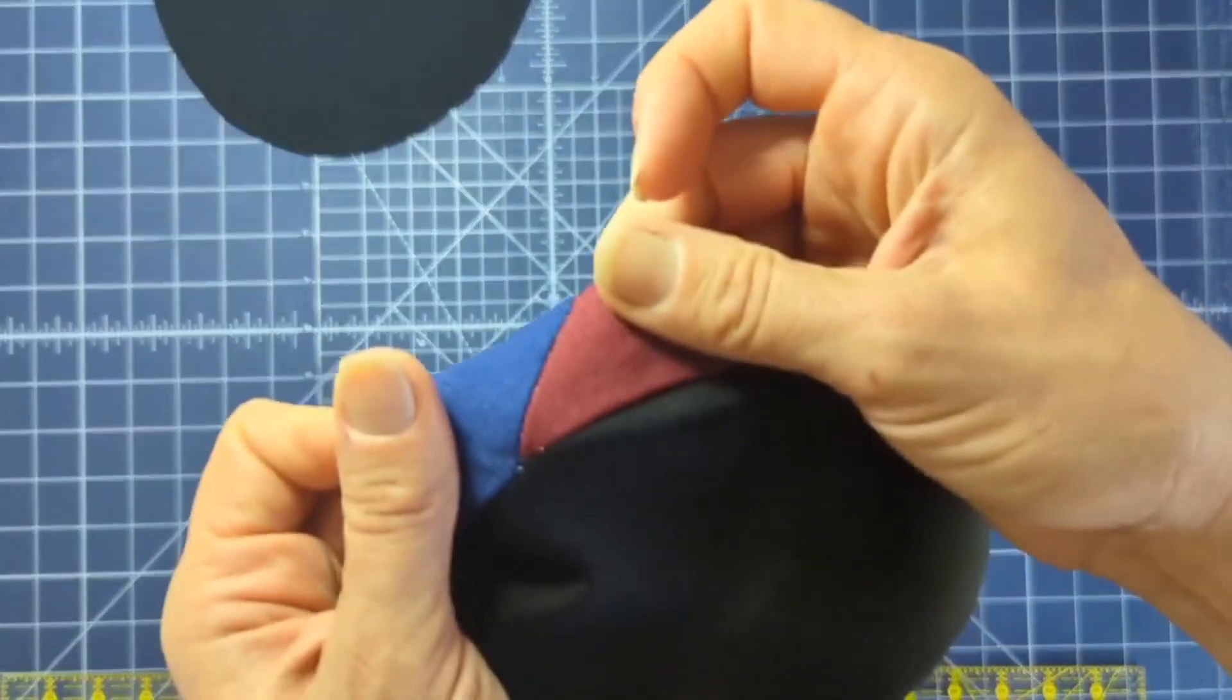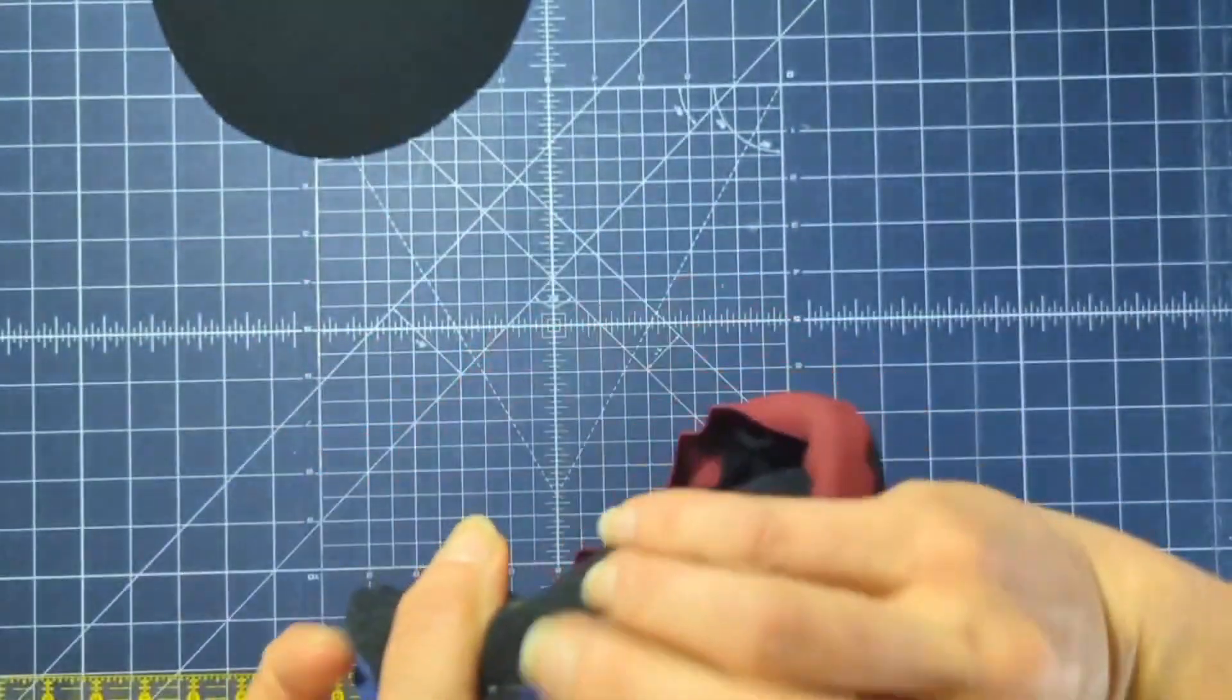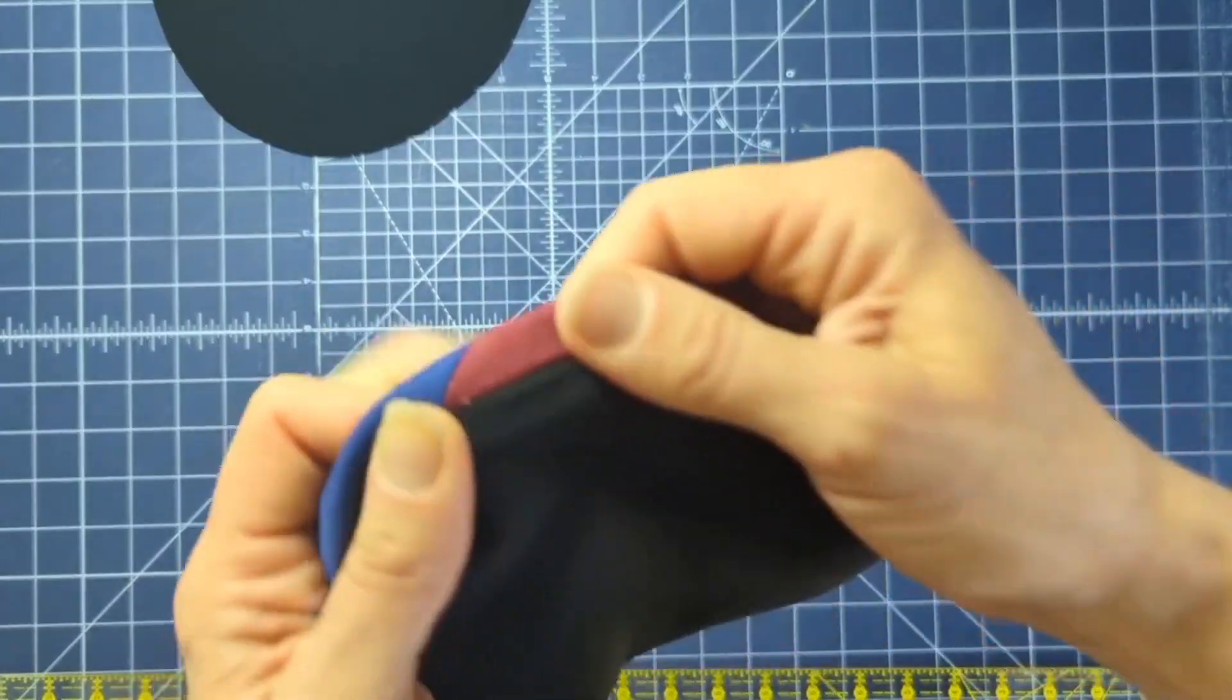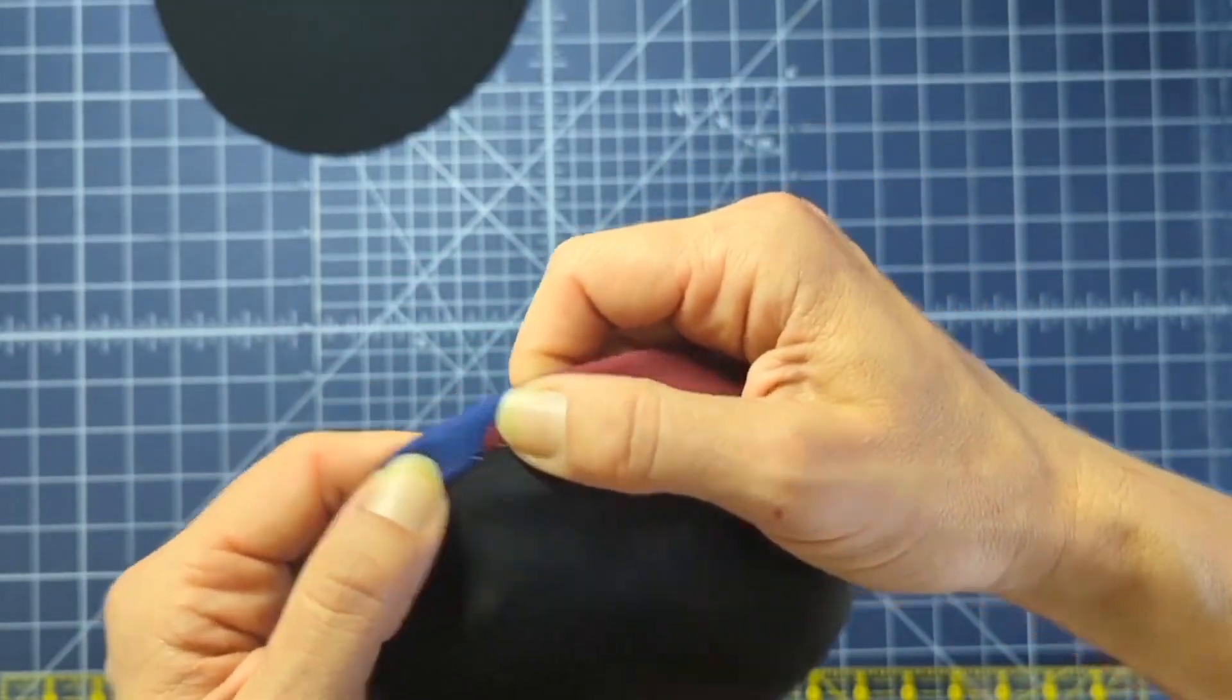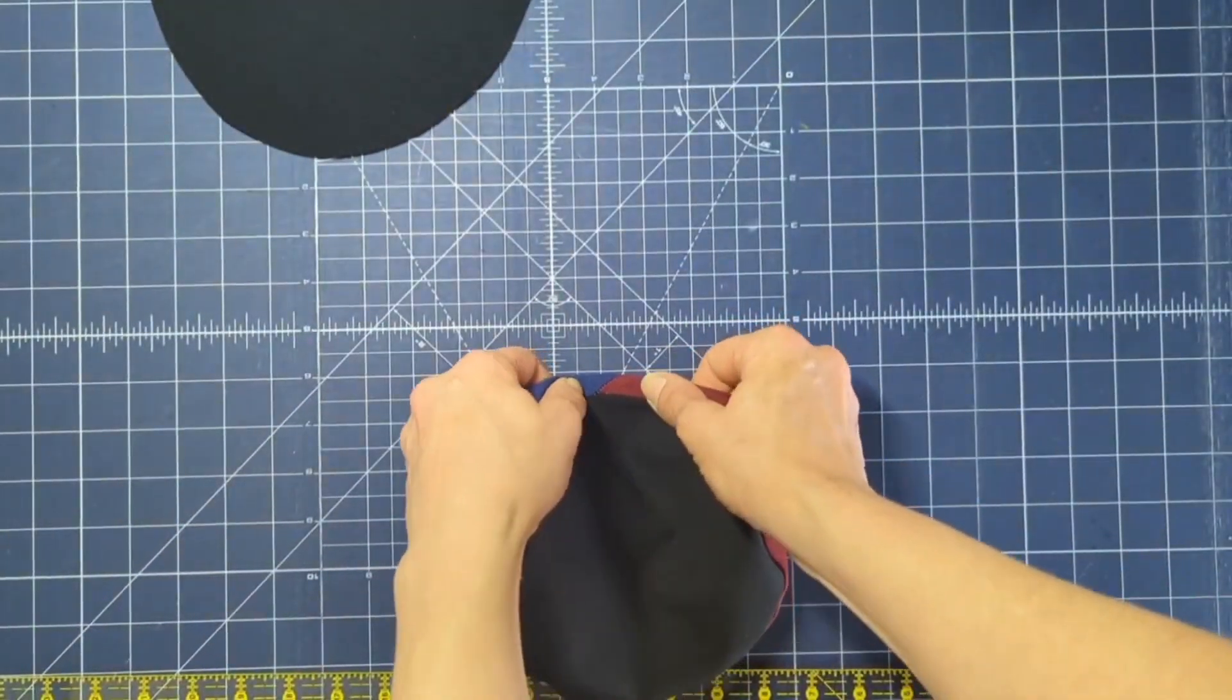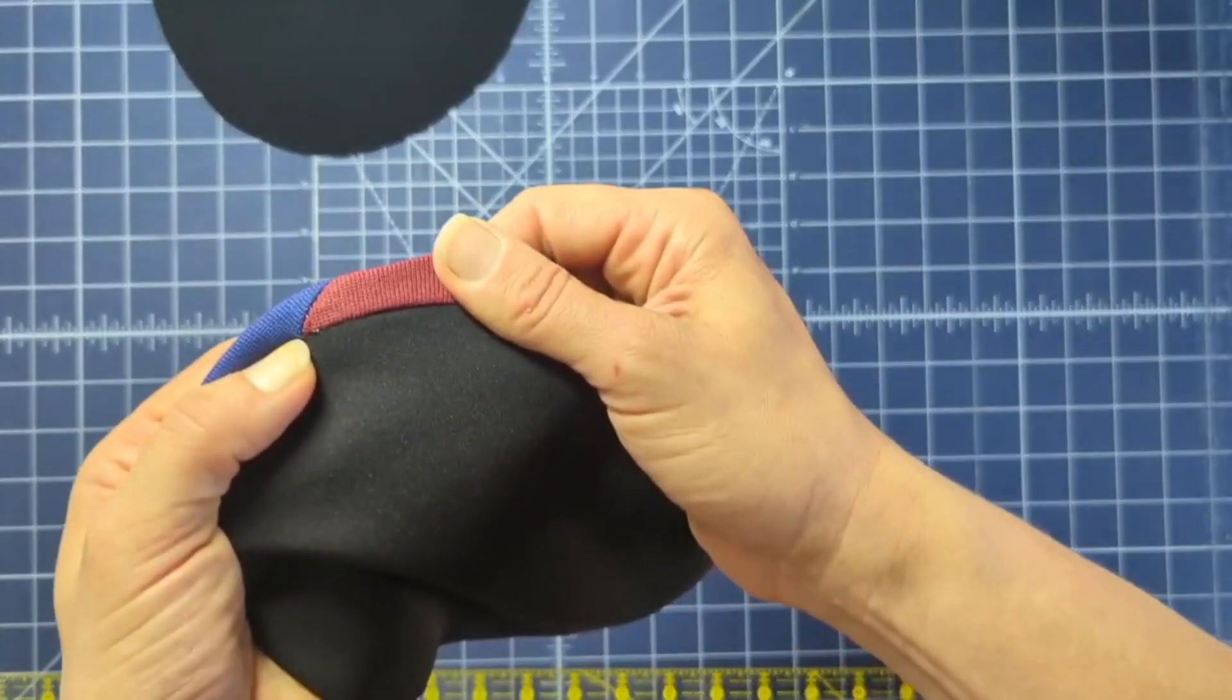You can see the difference here where I've joined them on an angle. When I bring that binding around to the back, my seam allowances are spread over a much greater distance—they start way over on the right there and they go all the way over to there. So that spreads those seam allowances over nearly two inches of distance and allows my binding to sit a lot flatter.